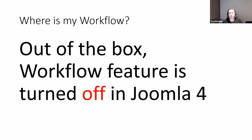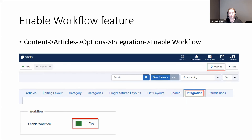When you install Joomla 4 and start playing around, you might think, where's this workflow feature? They've actually hidden it by default, so you have to turn it on. The way you turn it on is you go into your articles, into the Options button, and on the integrations tab within the options there's a flag 'enable workflow' that you change from no to yes. Once you've done that and saved it, the workflow features appear in Joomla.